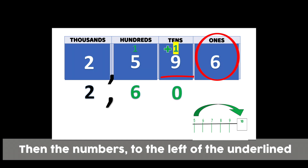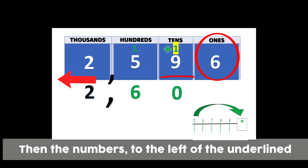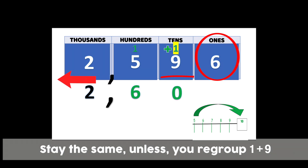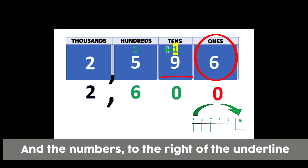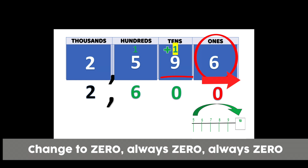Then the numbers to the left of the underline stay the same, unless you regroup — one plus nine. And the numbers to the right of the underline change to zero, always zero, always zero.